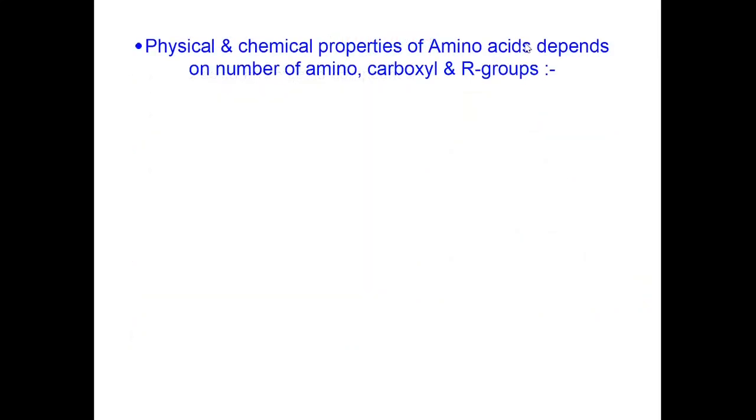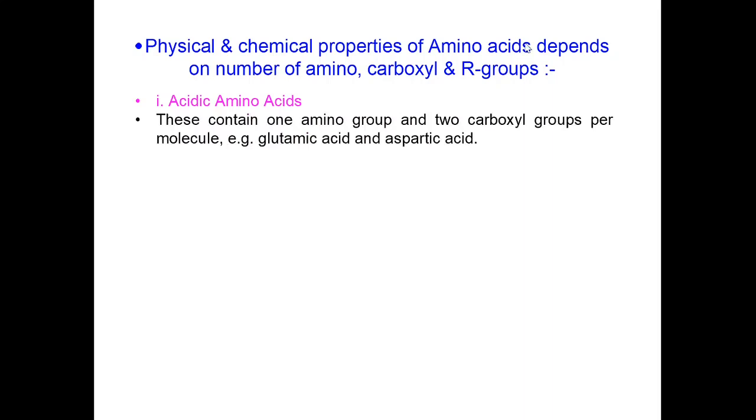The physical and chemical properties of amino acids depends on number of amino and carboxyl groups. 20 amino acids have been divided into following four groups. First are acidic amino acids. These contain one amino group and two carboxyl groups per molecule, hence called acidic amino acids. These are glutamic acid and aspartic acid.